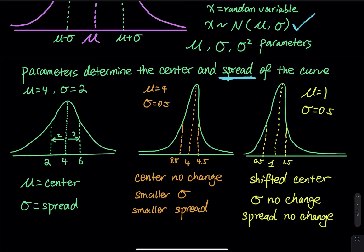If you change the sigma, you get either a very wide spread-out graph — a shorter mountain — or with a small sigma, you get a very steep graph — a tall mountain. That is the basic introduction to normal distribution. In the next video, I will talk about the empirical rule of the bell curve. If you find my instruction helpful, let me know in the comments below. Please subscribe and share my videos. I appreciate your help — see you all in the next lesson. Signing out.